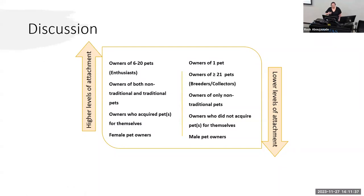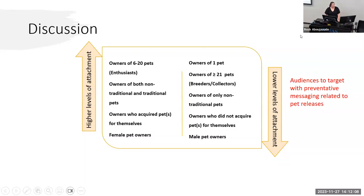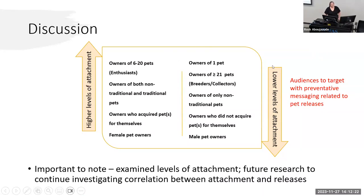For the discussion: previous studies focused on reducing introductions associated with the pet trade recommended reaching out and providing information at the point of sale. While that's still a good idea, my findings suggest a need to identify methods to target audiences with preventative messaging for individuals who did not actively choose to own their non-traditional pet — including owners of one pet, breeders, collectors, owners of more than 21 pets, and owners of only non-traditional pets. Importantly, I only looked at levels of attachment, not correlation between attachment and releases — that would be an area for future research.